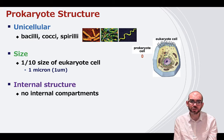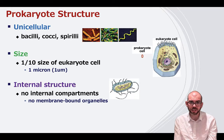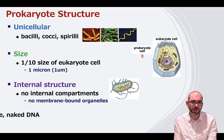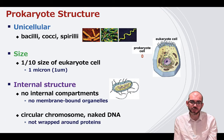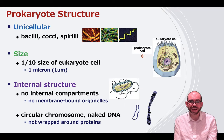Their internal structure is very simple. They have no internal compartments like those of a eukaryote, and that's why they have no membrane-bound organelles. Looking inside a prokaryote, you'll find some cytosol, some DNA, and some ribosomes — that's about it. Their DNA is unique as well. For a eukaryote, DNA is highly condensed around structures called histones and nucleosomes, but for a prokaryote it's a naked chromosome — there is no wrapping around histones or nucleosomes.